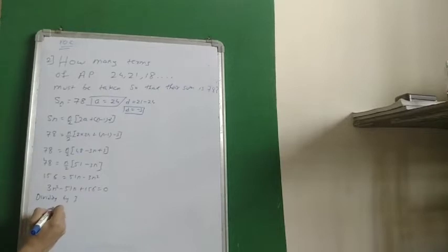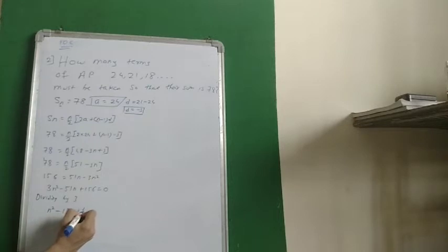Dividing by 3, we have N square. 156 divided by 3 is 52, 51 divided by 3 is 17. So N square minus 17N plus 52.